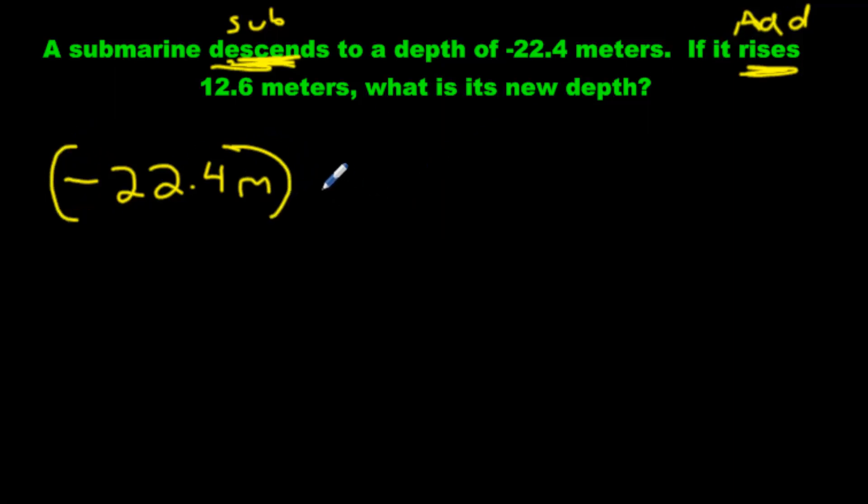And then it rises. So that means add 12.6. But is it positive 12.6? Is it negative 12.6? No, there's no symbol beside it, so we just write positive 12.6 meters. Make sure you put symbols, positive or negative, beside all numbers. Even if it's positive, still write it down. Now we have the question set up. This means rise, and this is just positive because there's no symbol beside it.